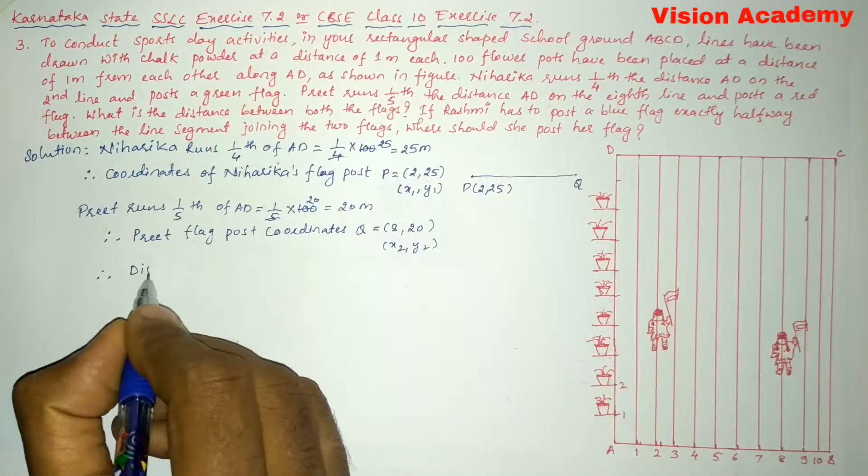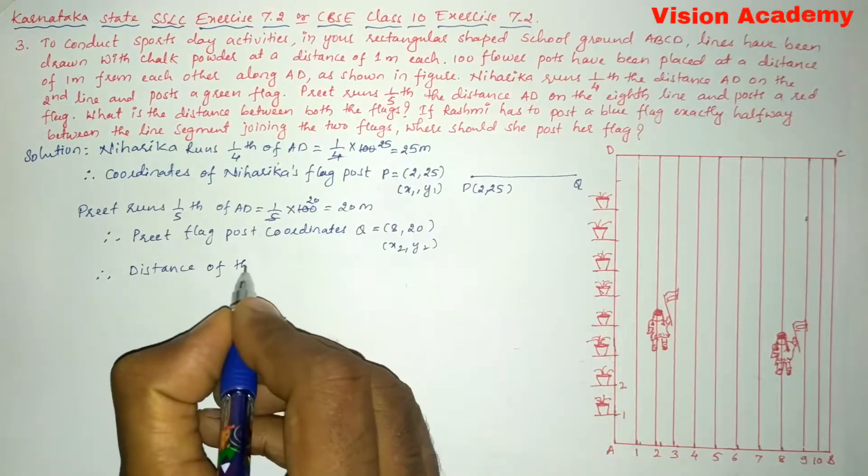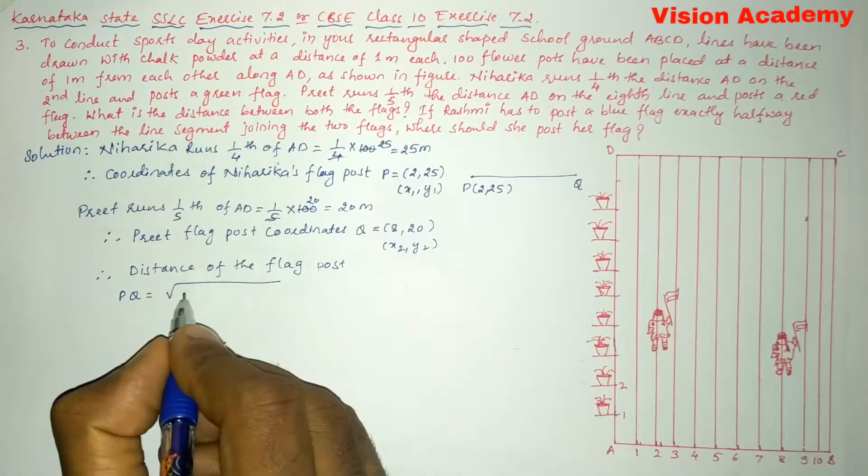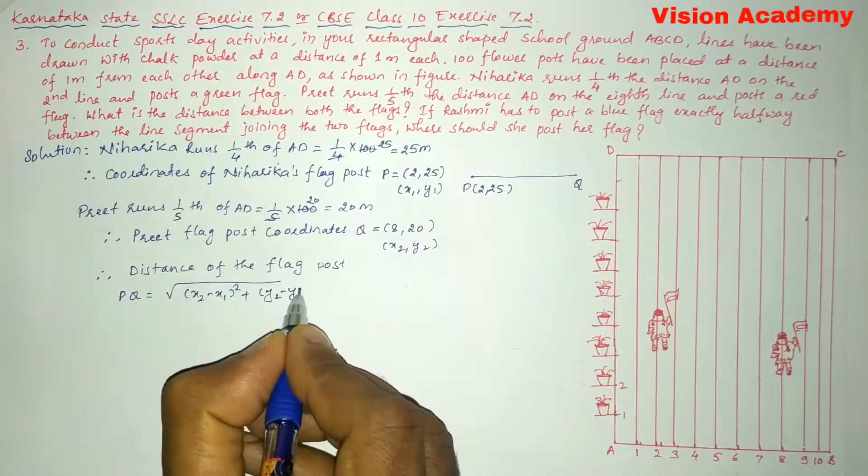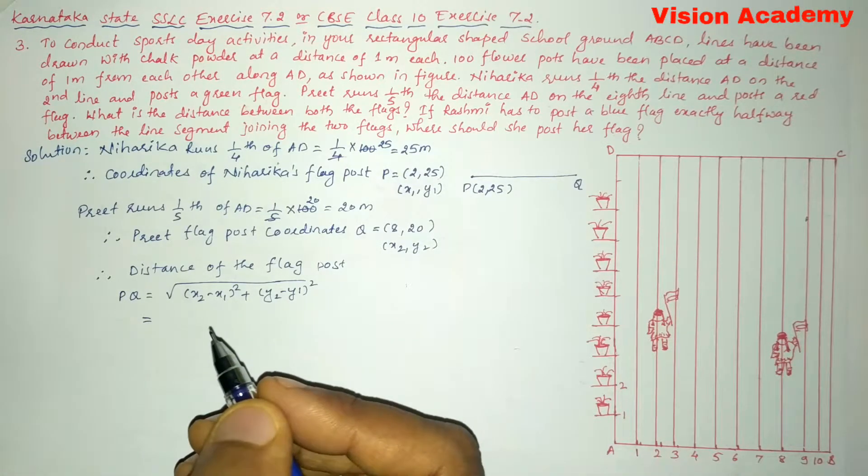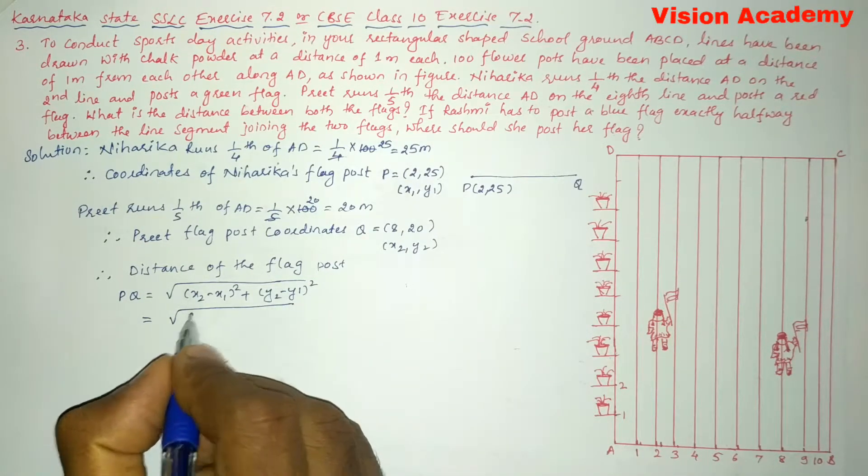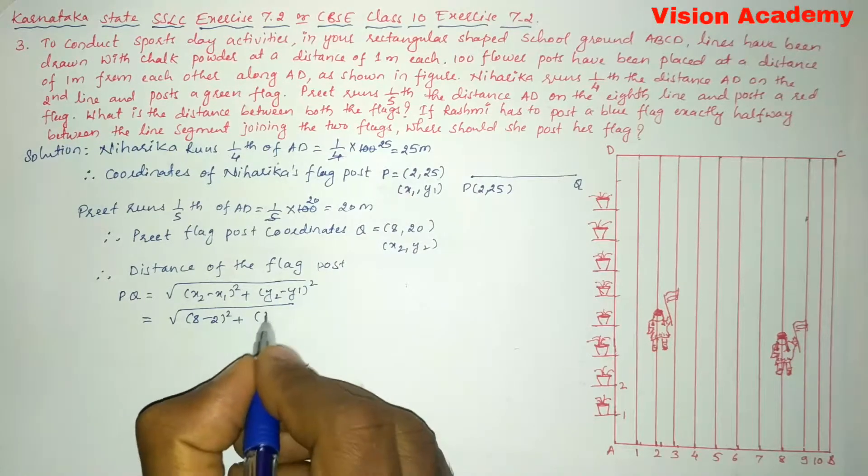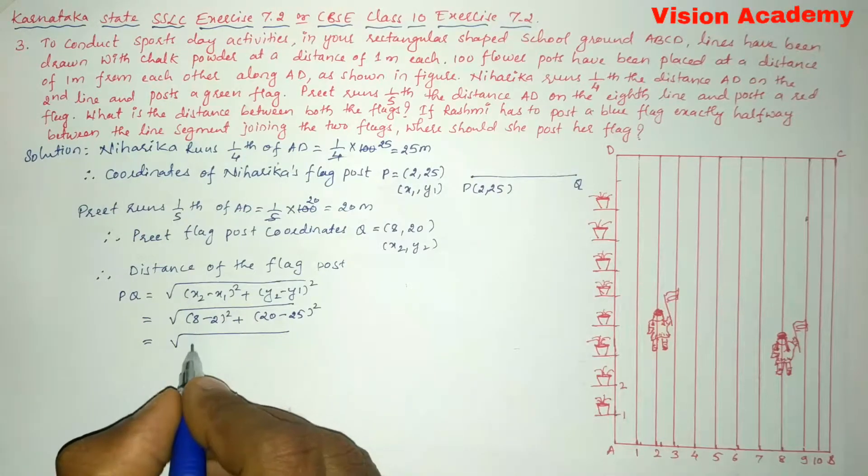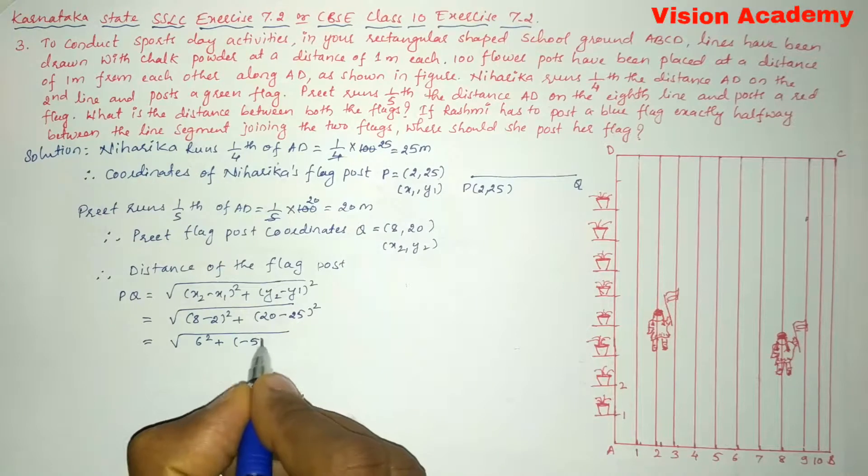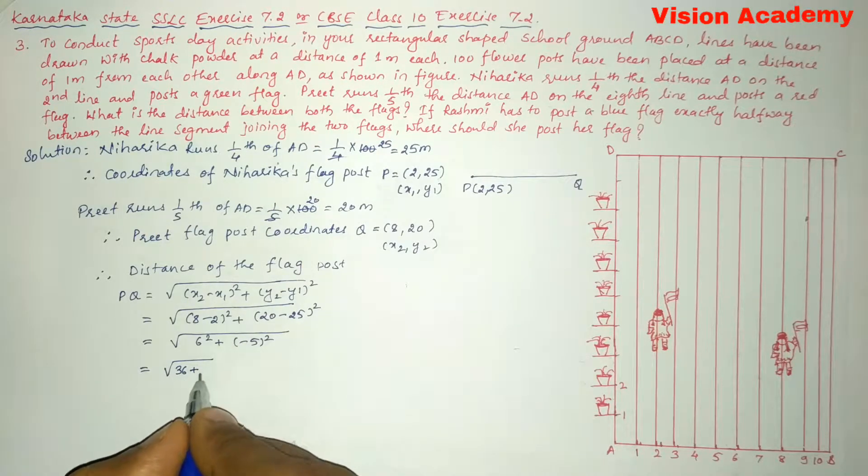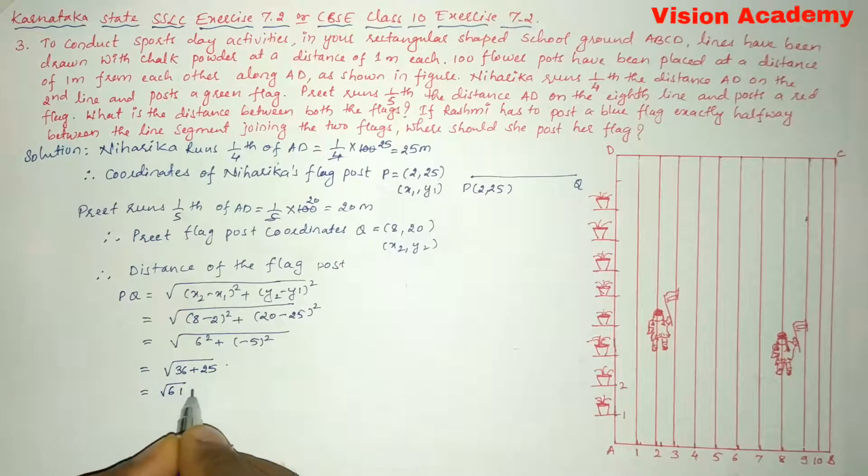Therefore we will use distance formula. Distance of the flag post PQ is equal to square root of (x2 minus x1) whole square plus (y2 minus y1) whole square. Now let us substitute the values. Here x2 is 8, x1 is 2 whole square plus y2 is 20 minus y1 is 25 whole square. This results in square root of (8 minus 2 is 6) squared plus (20 minus 25 is minus 5) squared. This gives us square root of 36 plus 25, which is square root of 61 meters.